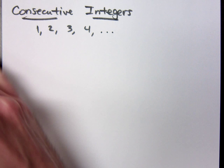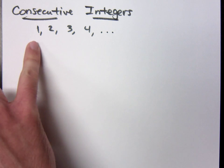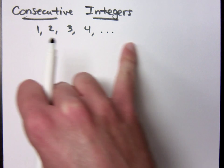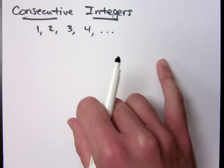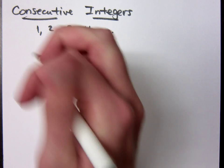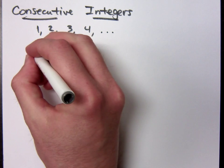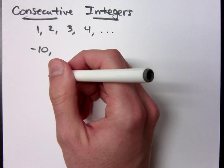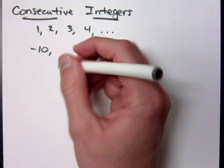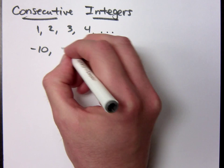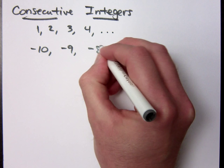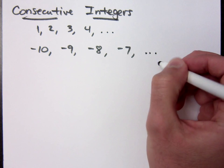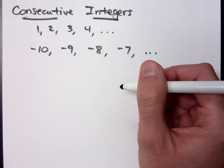If you look at them on the number line, the very next integer after one is two, and then three, and then four, and so on. What if I start with negative ten? The next integer after negative ten is going to be negative nine, and negative eight, and negative seven, and so on.